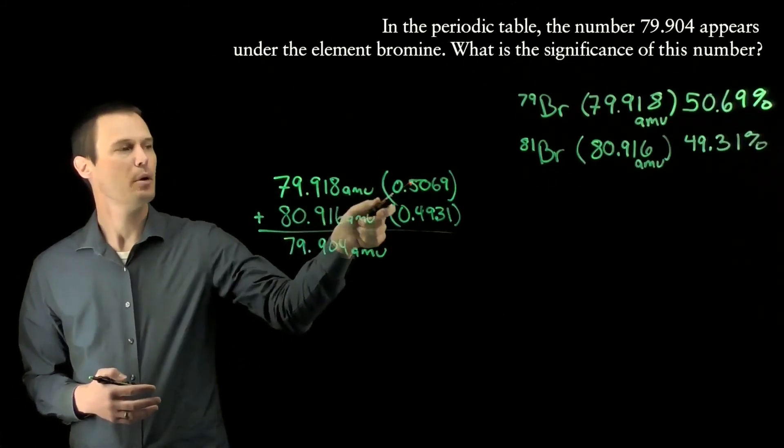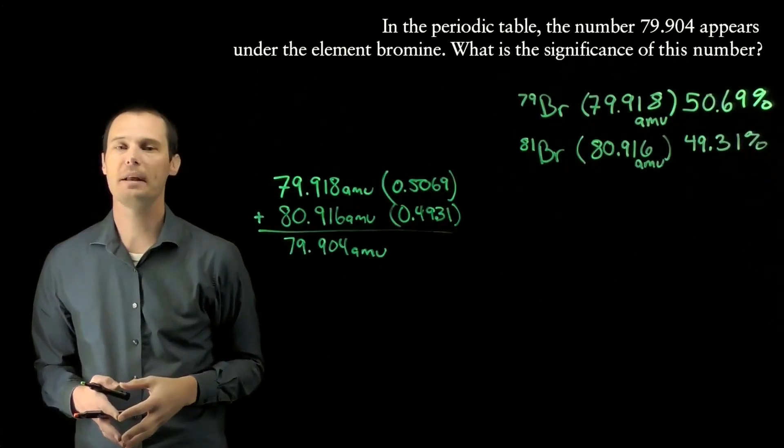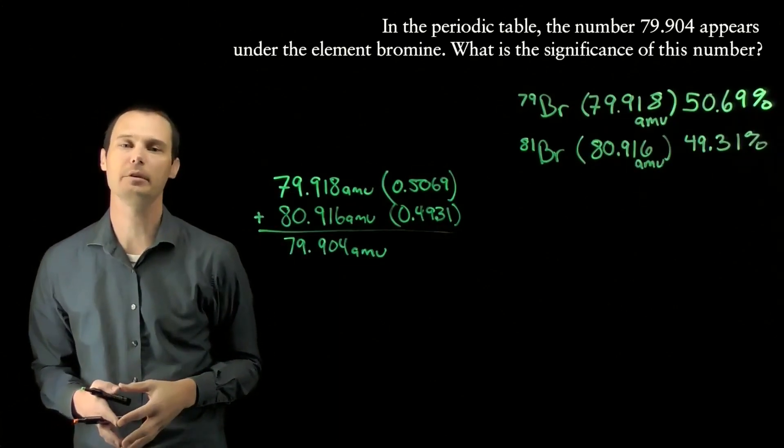We take each individual mass, multiply it by its isotopic abundance, and we add those together to get the weighted average atomic mass for any given element on the periodic table.